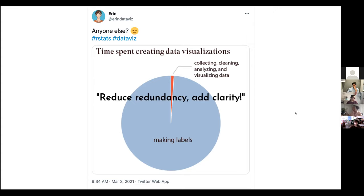Which is why you should also remember the principle from earlier: reduce redundancy and add clarity. You're adding labels to add clarity — don't be redundant. Don't add labels that just say "this is where x equals one" — they can see that. Why should they care that it's where x equals one?